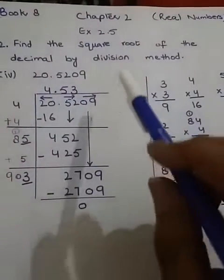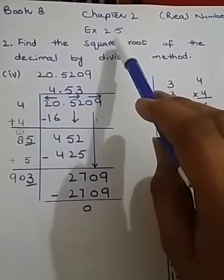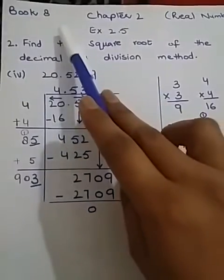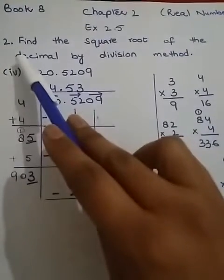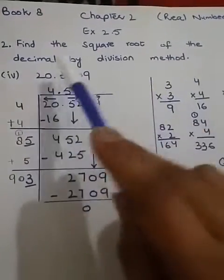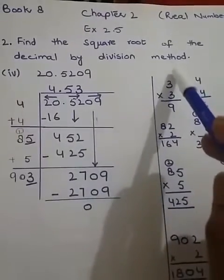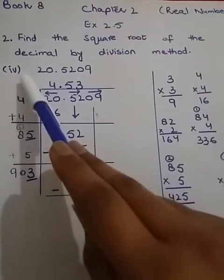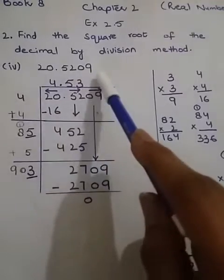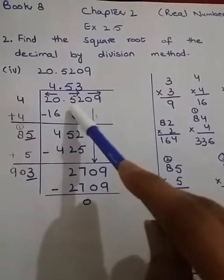Good afternoon students, I'm going to do exercise 2.5 with you from book 8. Question number 2: find the square root of the decimal by division method. I'm going to do part 4 with you: 20.5209.